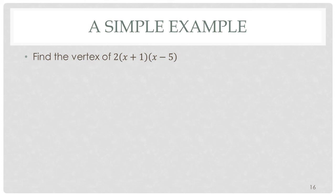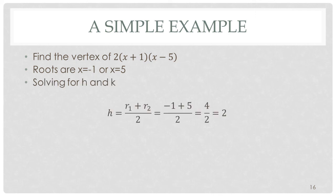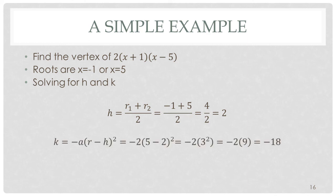Let's look at a simple example. We want to find the vertex of 2 times the quantity x plus 1 and x minus 5. We are given the roots: x equals minus 1 and x equals 5. Solving for h and k, h is just minus 1 plus 5 divided by 2 — that is 4 divided by 2, or 2, the mean between minus 1 and 5. K is minus 2 times the quantity 5 minus 2 squared, so that is minus 2 times 3 squared, or minus 2 times 9, or minus 18. So the vertex is at 2, minus 18.